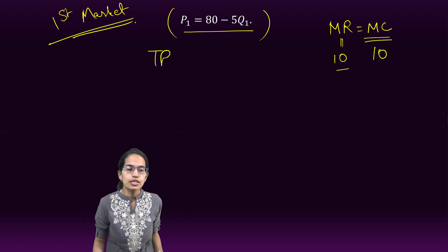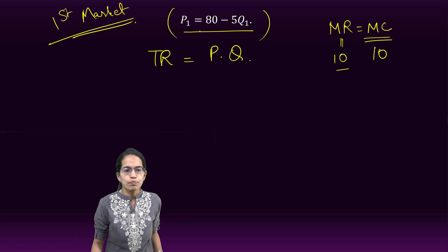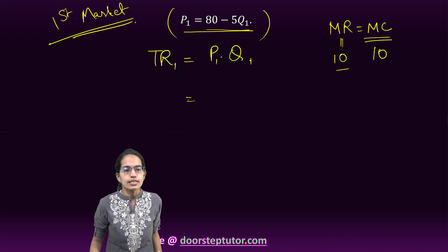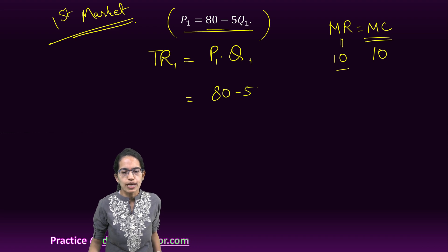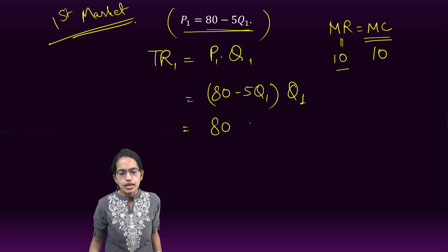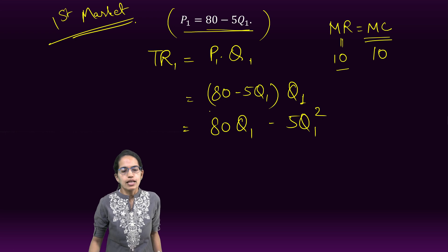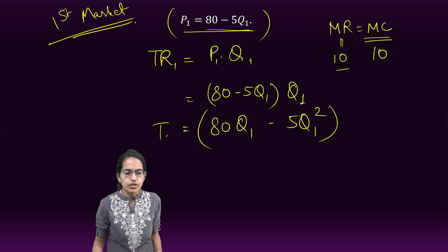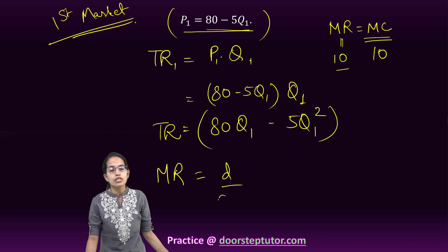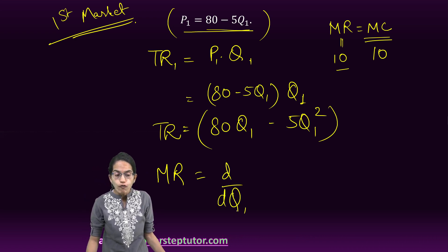We know total revenue equals price into quantity. Price in this case is already given, so we multiply it with quantity. So TR1 = P1 × Q1 = (80 − 5Q1) × Q1, which gives 80Q1 − 5Q1².